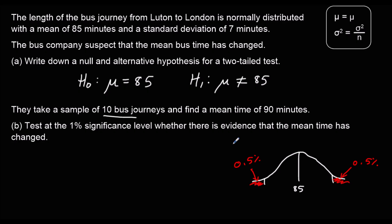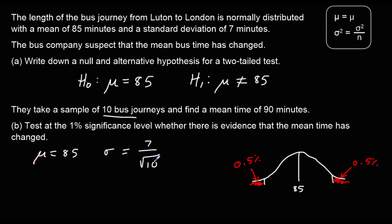Let's write down the mean and standard deviation. The mean is 85 and the standard deviation is 7 over square root n, so 7 over root 10.